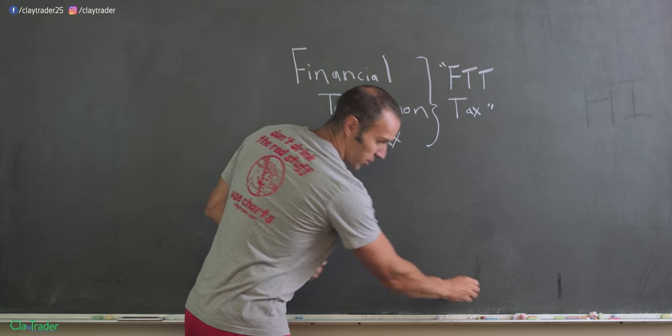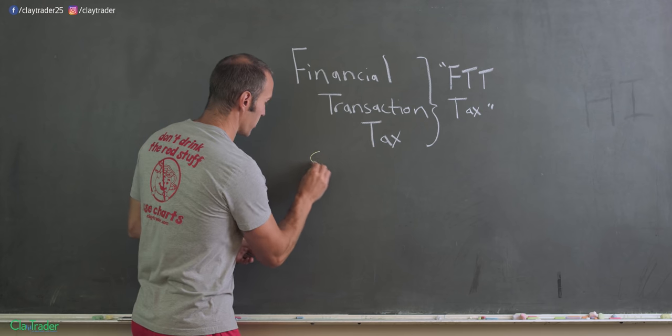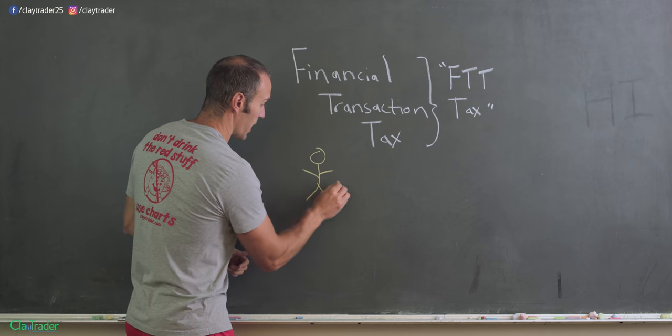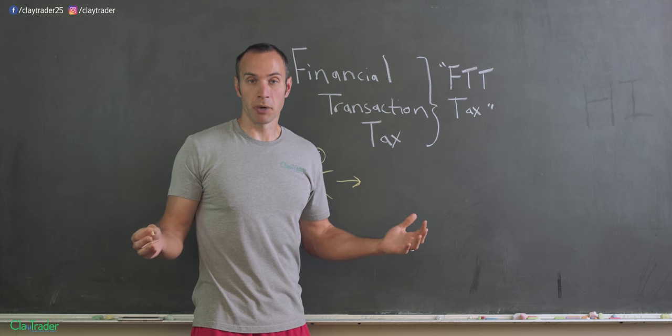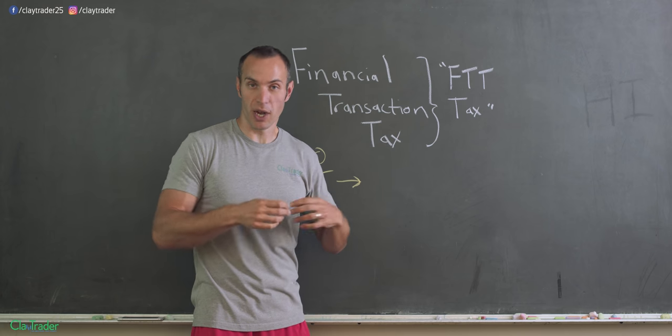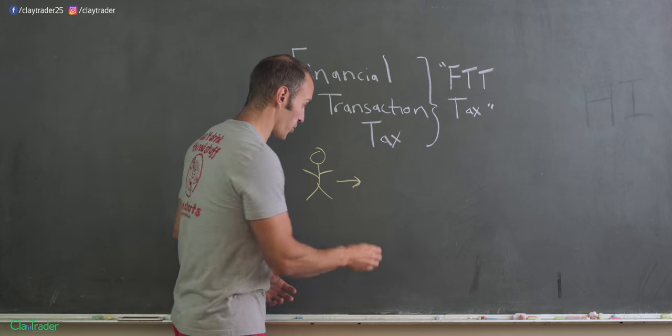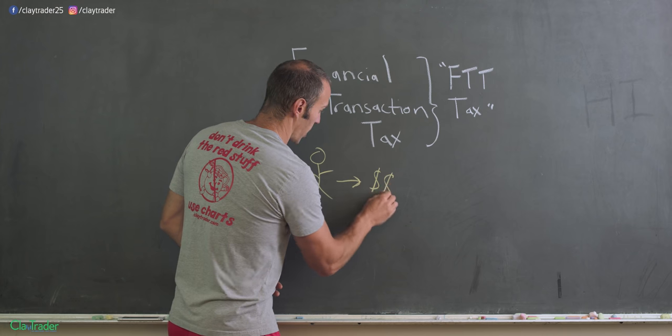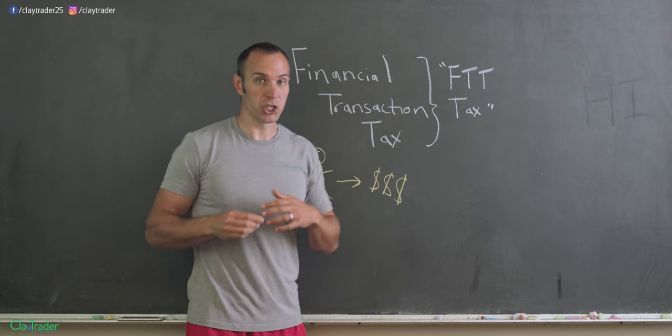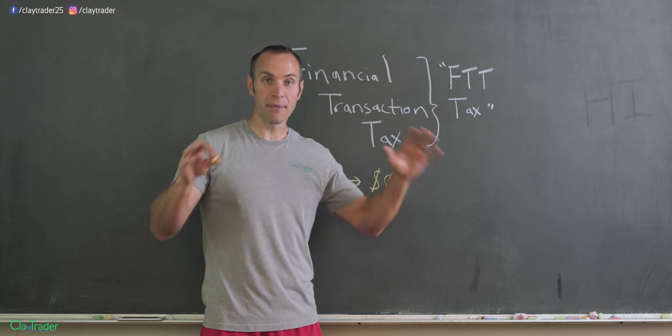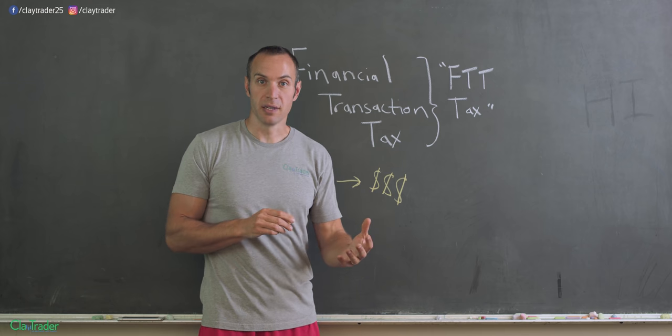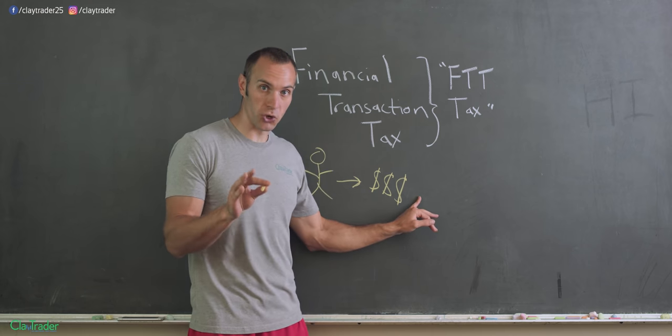And the way it works from a broad sense is you're gonna have a trader, and they're gonna put a certain amount of money into the market, right? Because you have to buy a stock. So they're gonna go in there and buy something which requires money. It requires money just to buy it. I'm not saying profit from it, but just to buy it. That's all that the money we're concerned about.